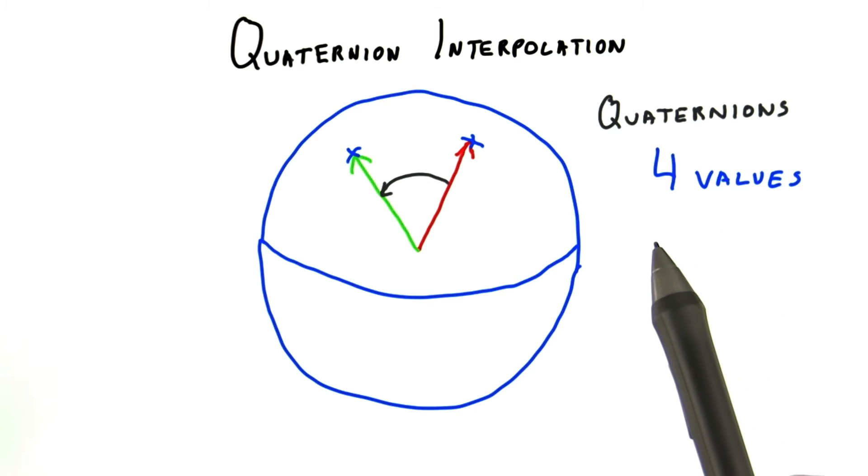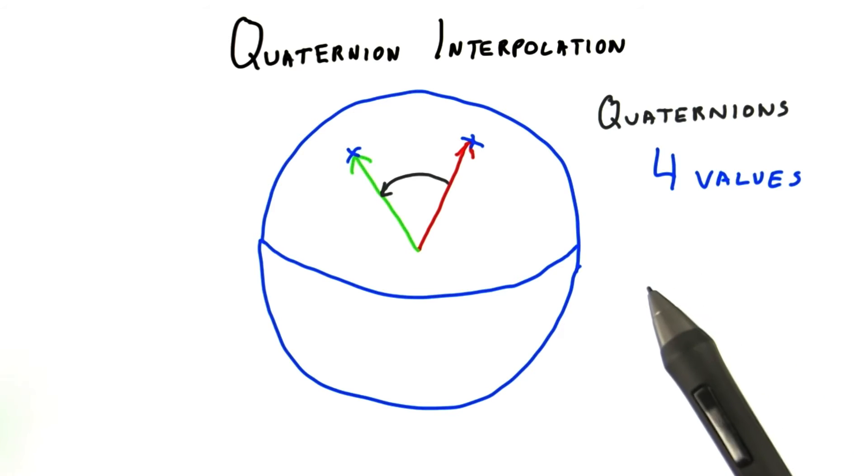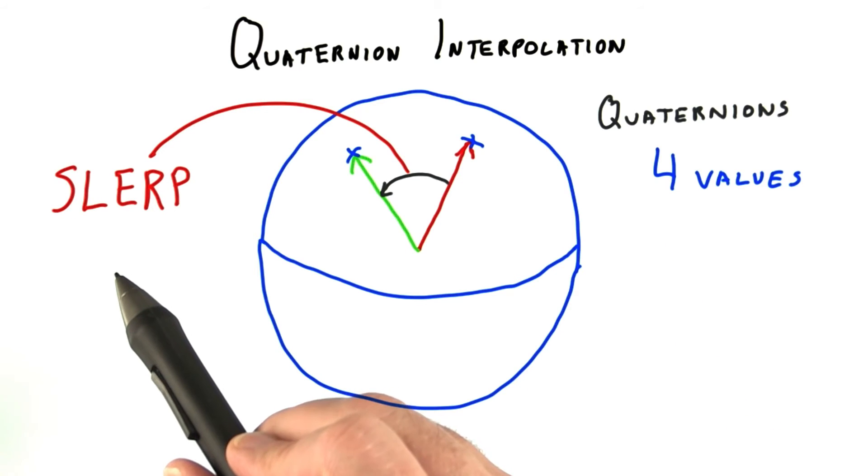Quaternions themselves are fairly non-intuitive as to what their four numbers mean in physical terms when compared to axis-angle. However, just like you rarely look at a single number in a rotation matrix, the meaning of the quaternion's individual values doesn't really matter when you're using them.